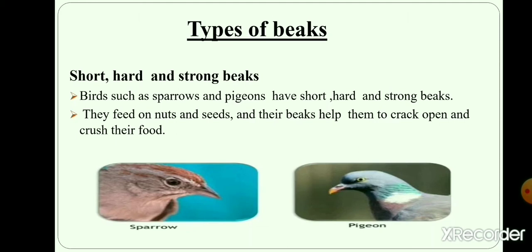Short, hard and strong beaks. Birds such as sparrows and pheasants have short, hard and strong beaks. Their beaks help them to crack open and crush their food. Such beaks are also known as crushing beaks.